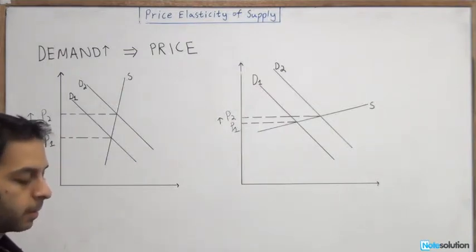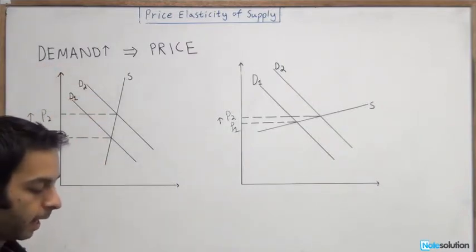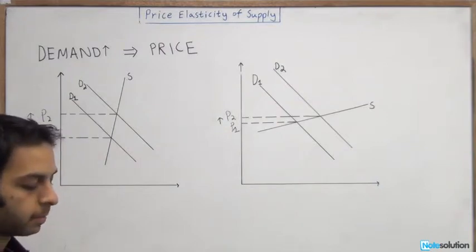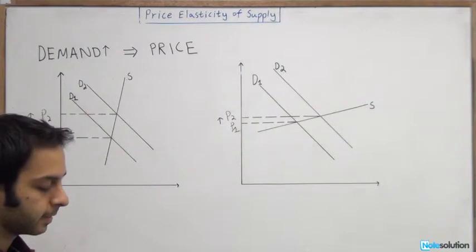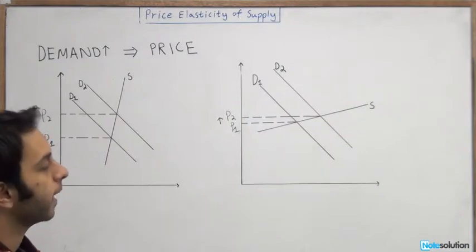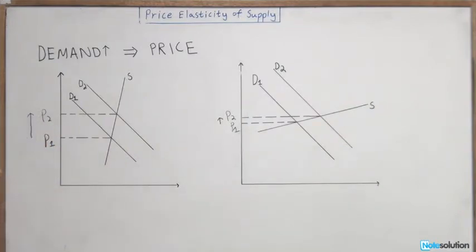The question says: the demand for corn increases, so the demand for corn has gone up. As a result, the price of corn will — blank — and the less elastic the supply of corn — blank — will be the effect on the price. We have choices that will fill in these blanks, and we need to pick the correct one.